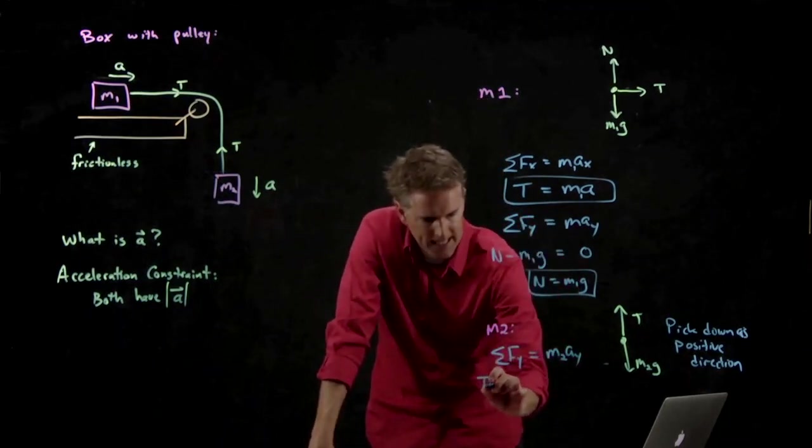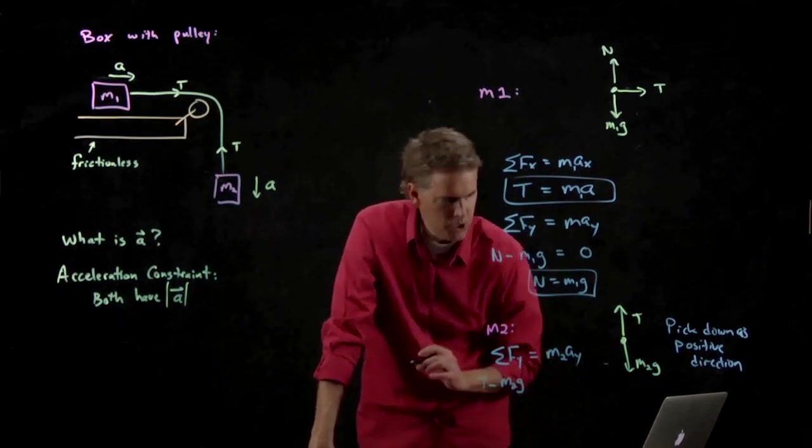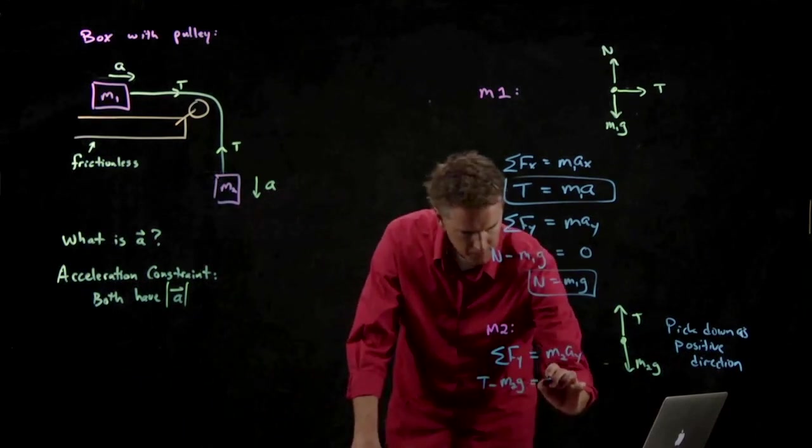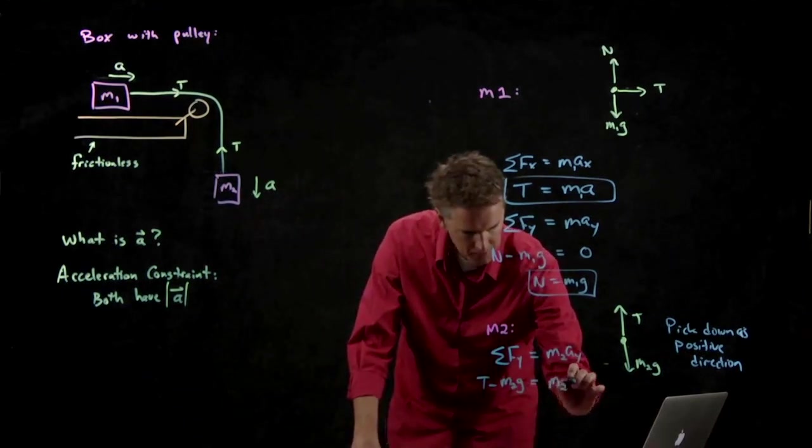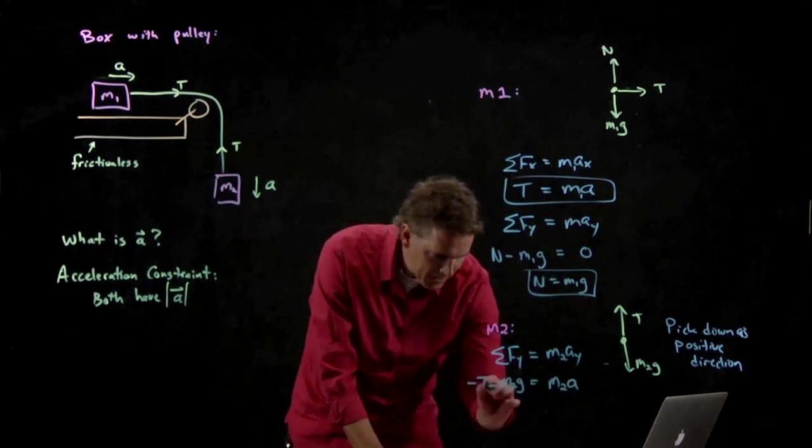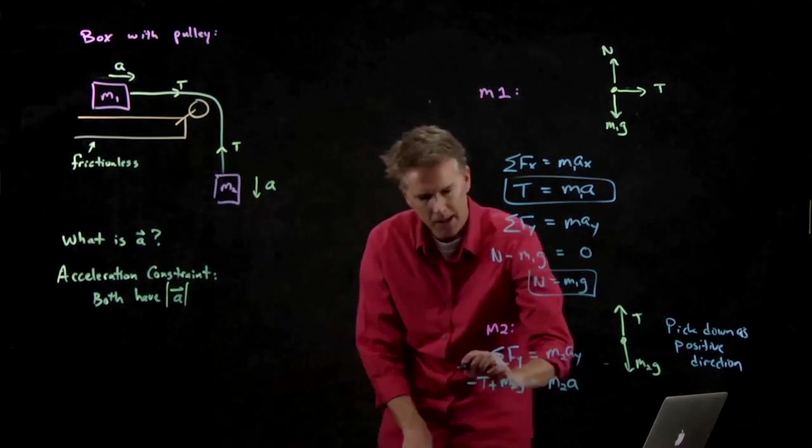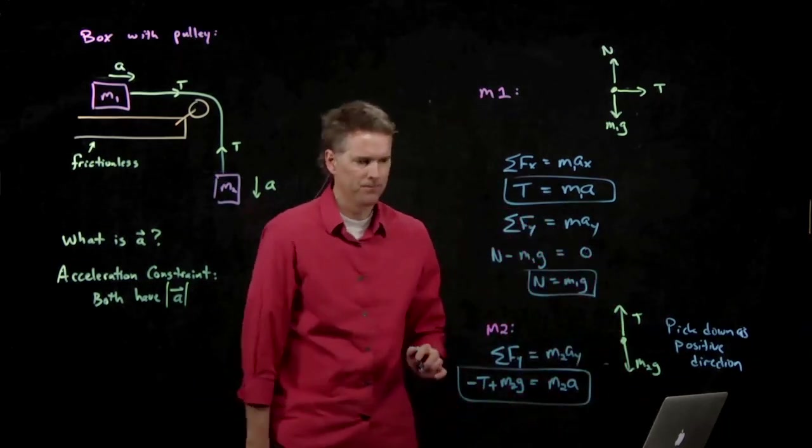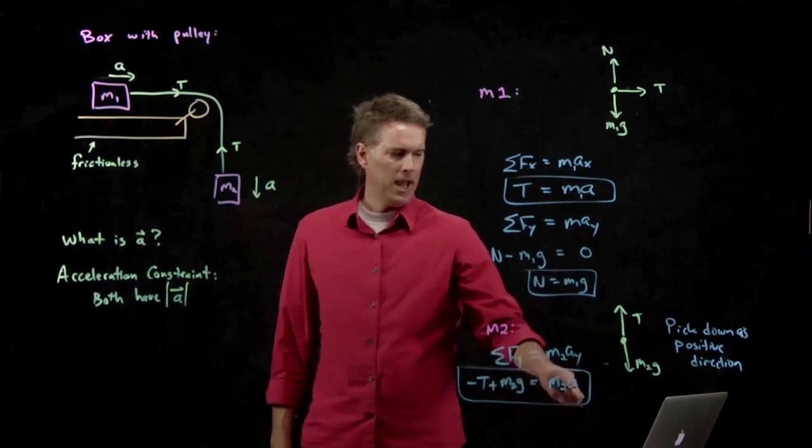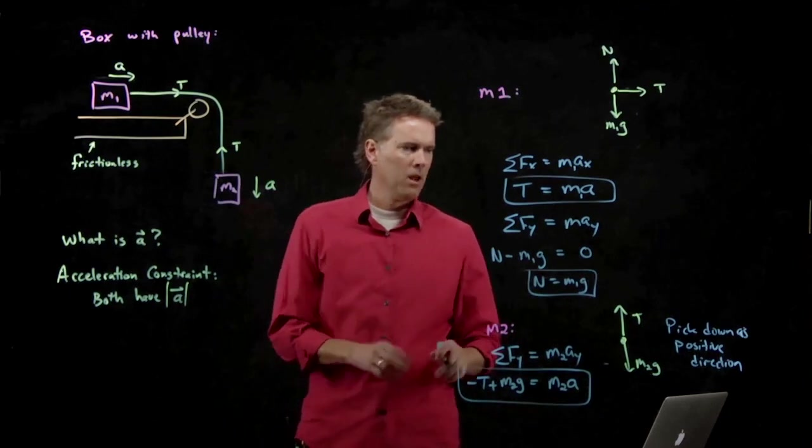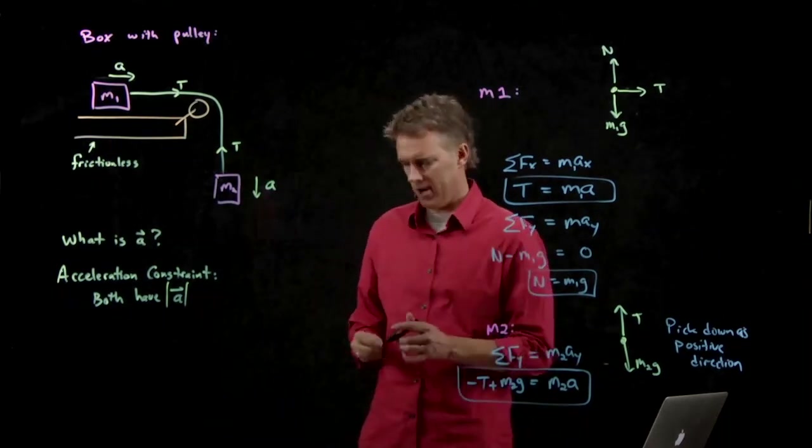So what do we get? We get T minus M2g equals mass number 2 times the acceleration. But we need to reverse those because we said down was positive. And so you make it minus T plus M2g. G and A had better be in the same direction, so they better have the same sign.